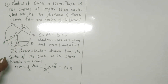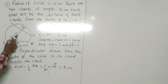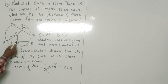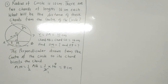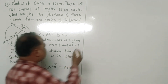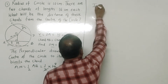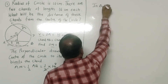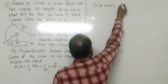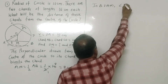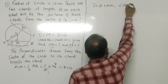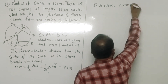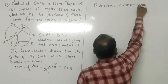Now in triangle AOM, it is a right-angle triangle. So by using the Pythagorean theorem we will find OM. Since OA is given as 10 and AM is 8, we apply the Pythagorean theorem. In triangle OAM, angle OAM is equal to 90 degrees.